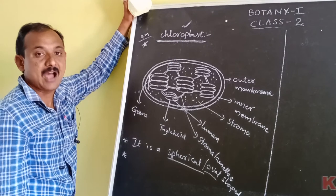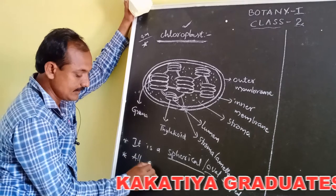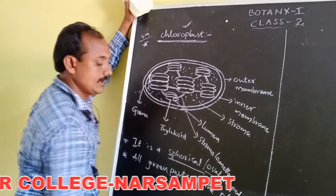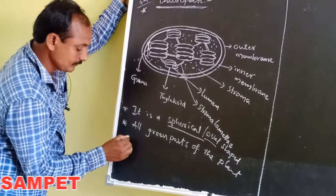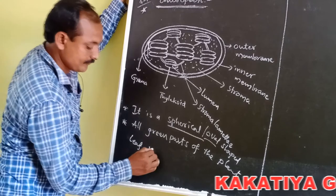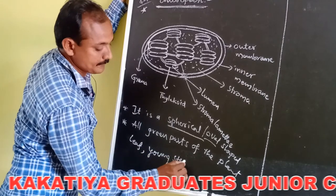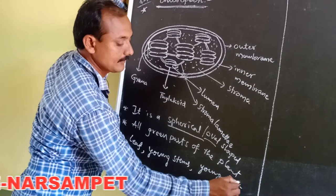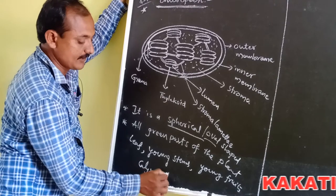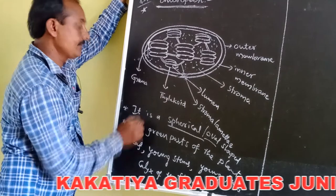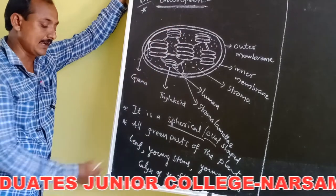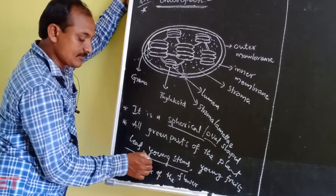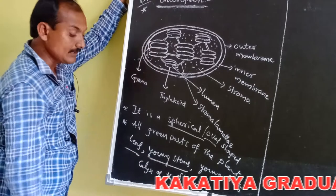Chloroplast is present in all green parts of the plant — green parts like leaf, fruit, young stems, young fruits, and the calyx of the flower. Leaves are green in color due to the presence of chlorophyll pigments, and young stems are also green in color due to the presence of chlorophyll.